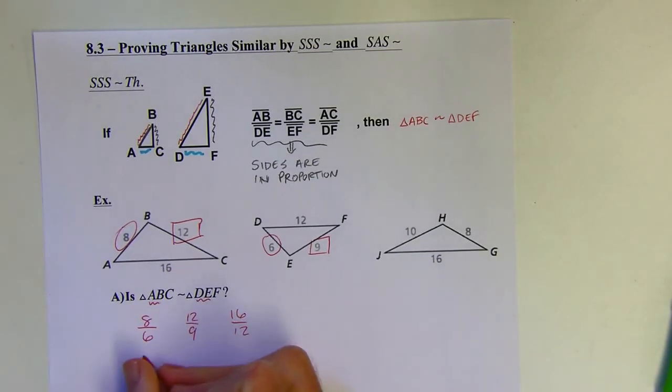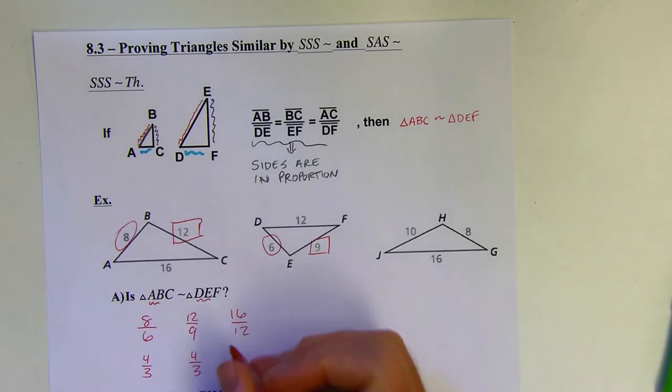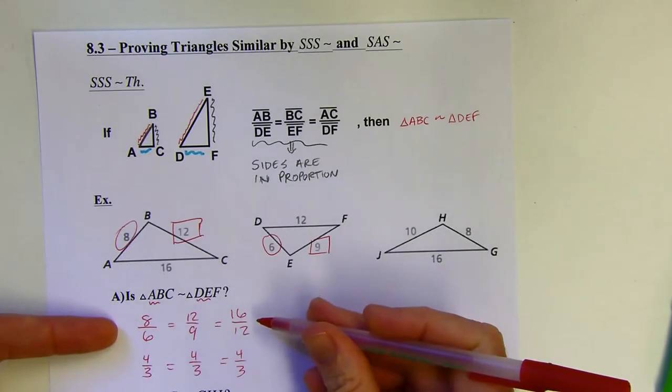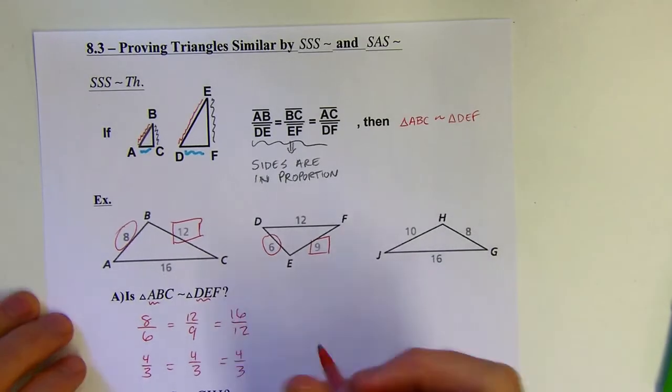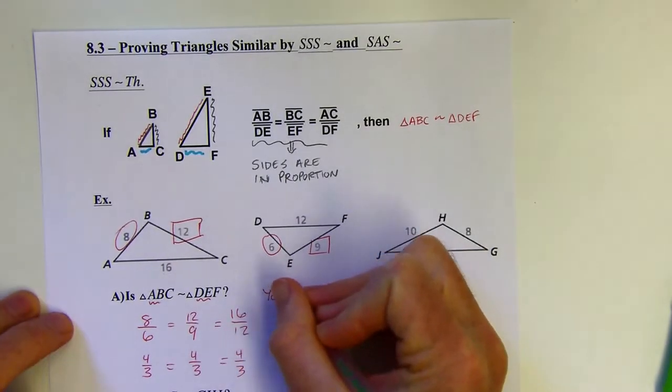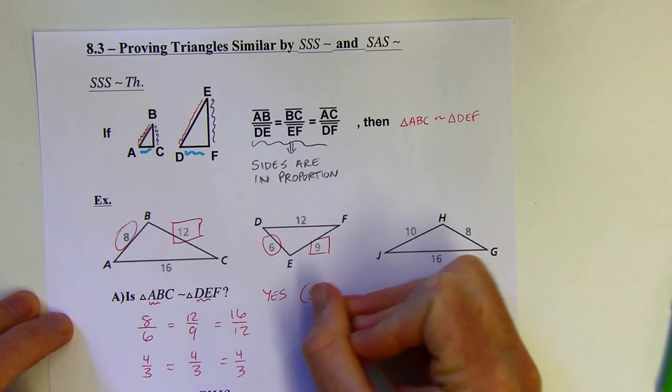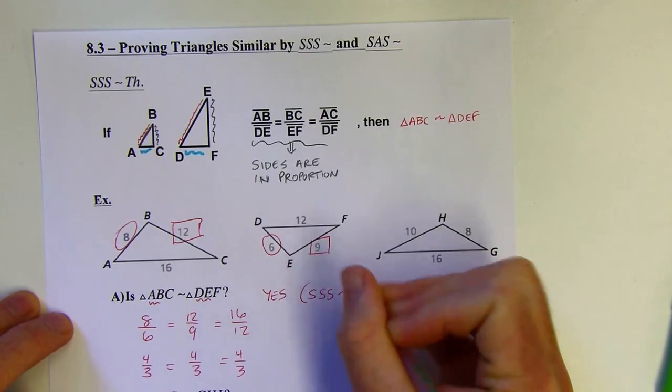So let's reduce these. This reduced would be 4 thirds, because I could divide by 2. I can divide these numbers both by 3, and then I'll get 4 thirds. I can divide these both by 4, and I got 4 thirds. So those are all equal. That means those sides are in proportion, and my answer is going to be yes. I used SSS similarity theorem.